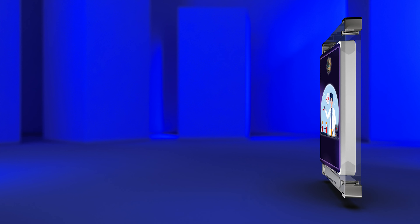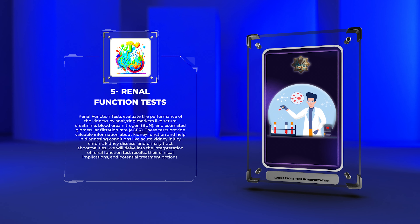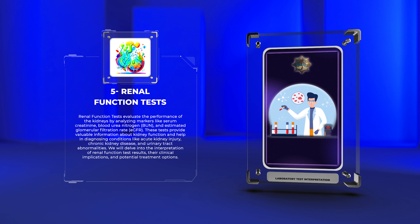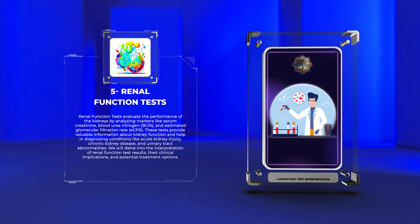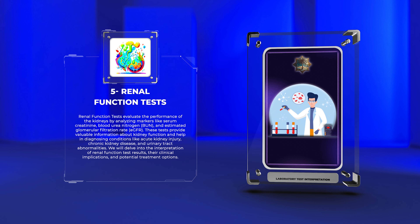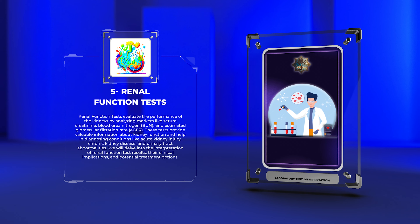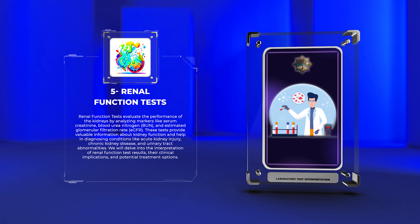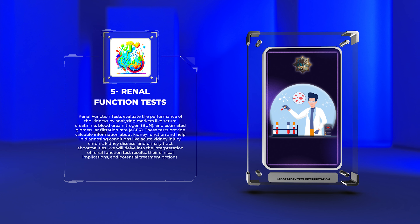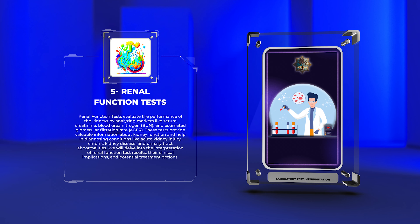Renal function tests evaluate the performance of the kidneys by analyzing markers like serum creatinine, blood urea nitrogen (BUN), and estimated glomerular filtration rate (eGFR). These tests provide valuable information about kidney function and help in diagnosing conditions like acute kidney injury, chronic kidney disease, and urinary tract abnormalities. We will delve into the interpretation of renal function test results, their clinical implications, and potential treatment options.